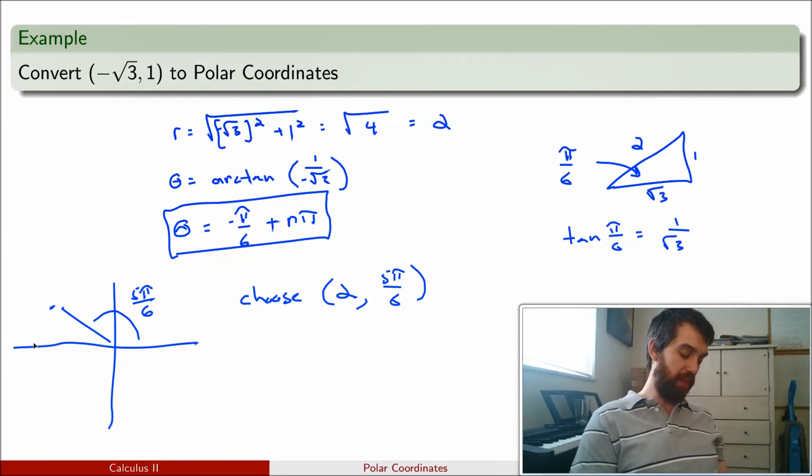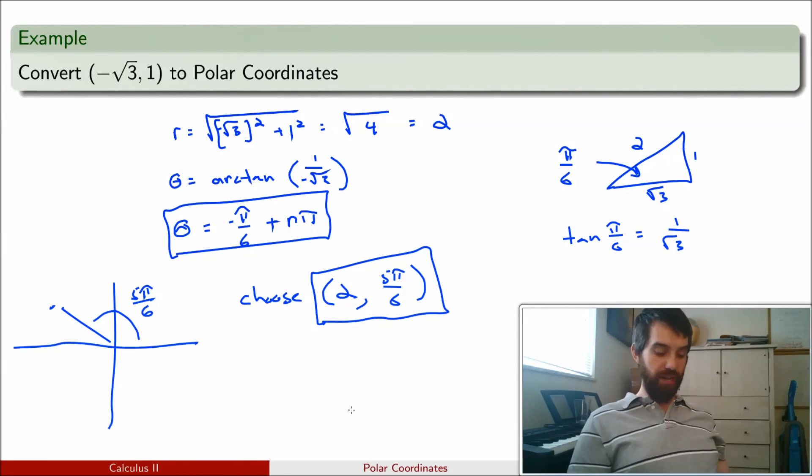Pi would be if it was exactly horizontal. So, 5 pi over 6 seems like the value that's nearby that would make sense. And so, this is my particular pairing. And it's true. If I wanted to, I could make this minus 2 and leave the minus pi over 6. That'd be fine. It just wouldn't be standard.